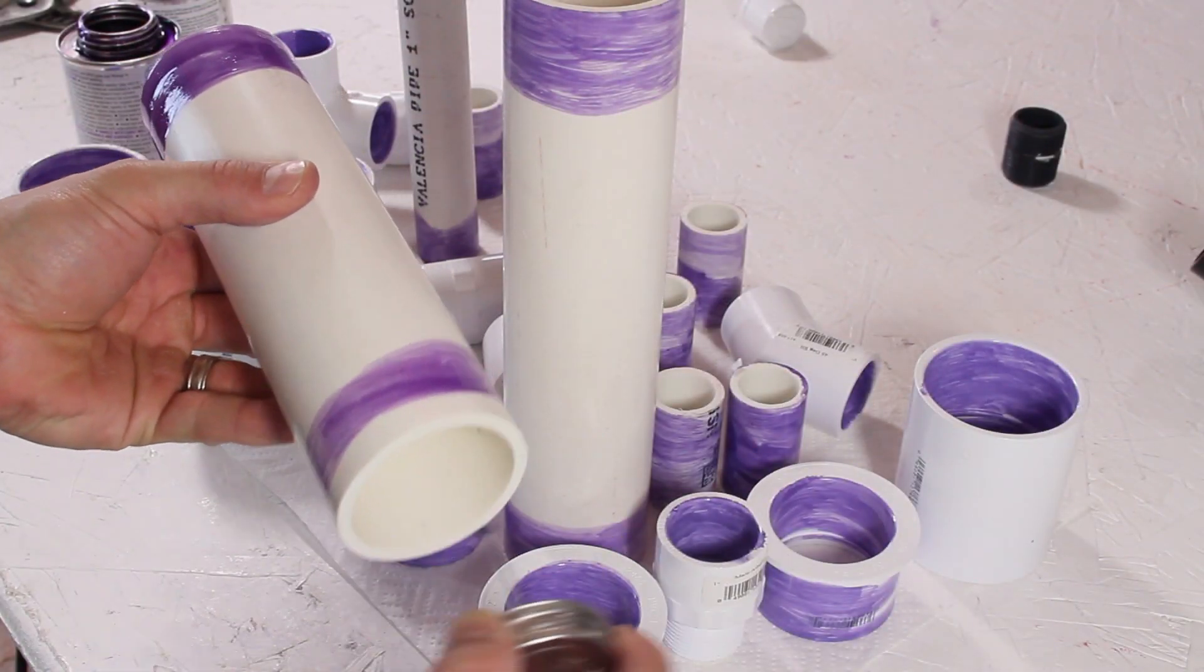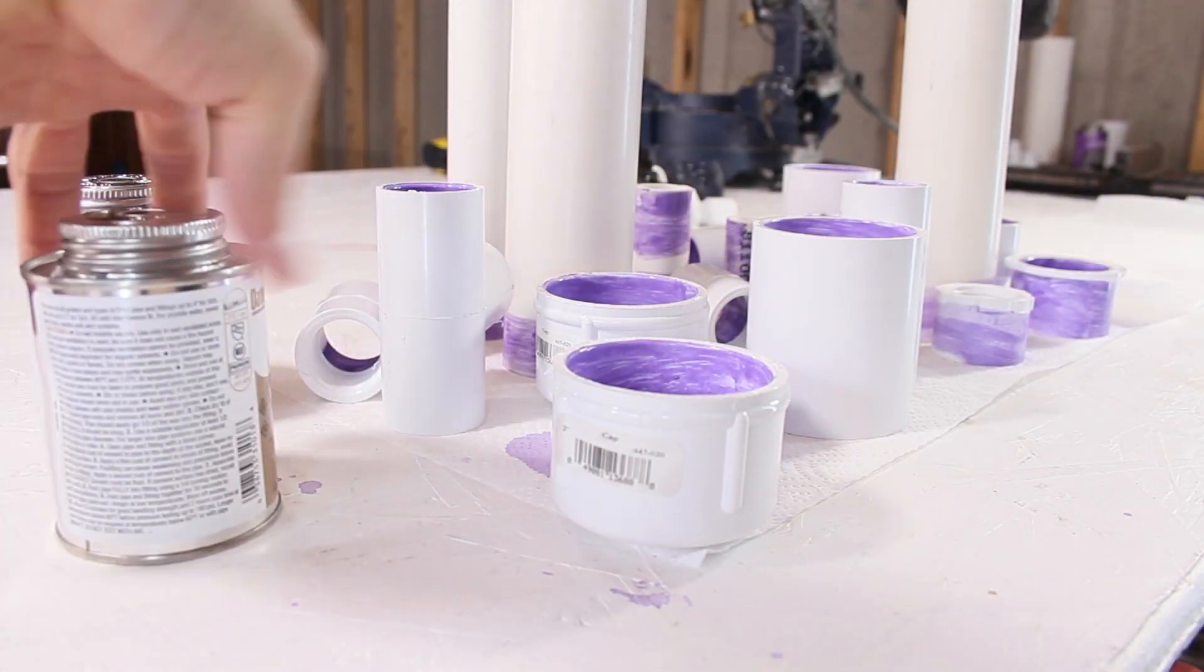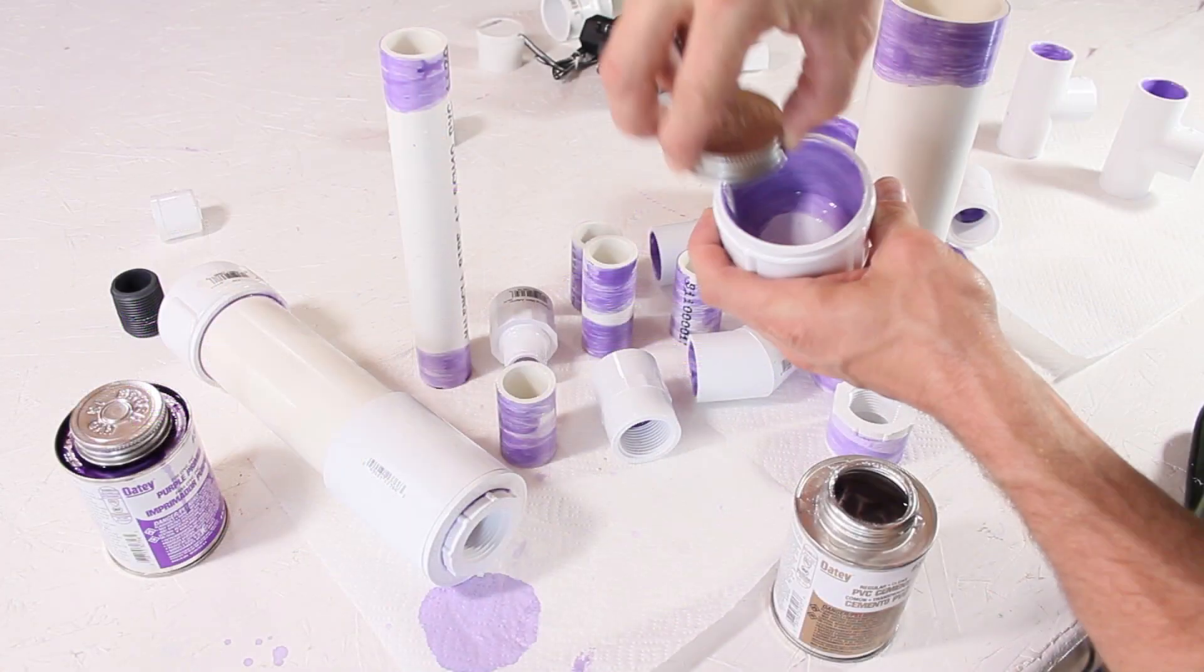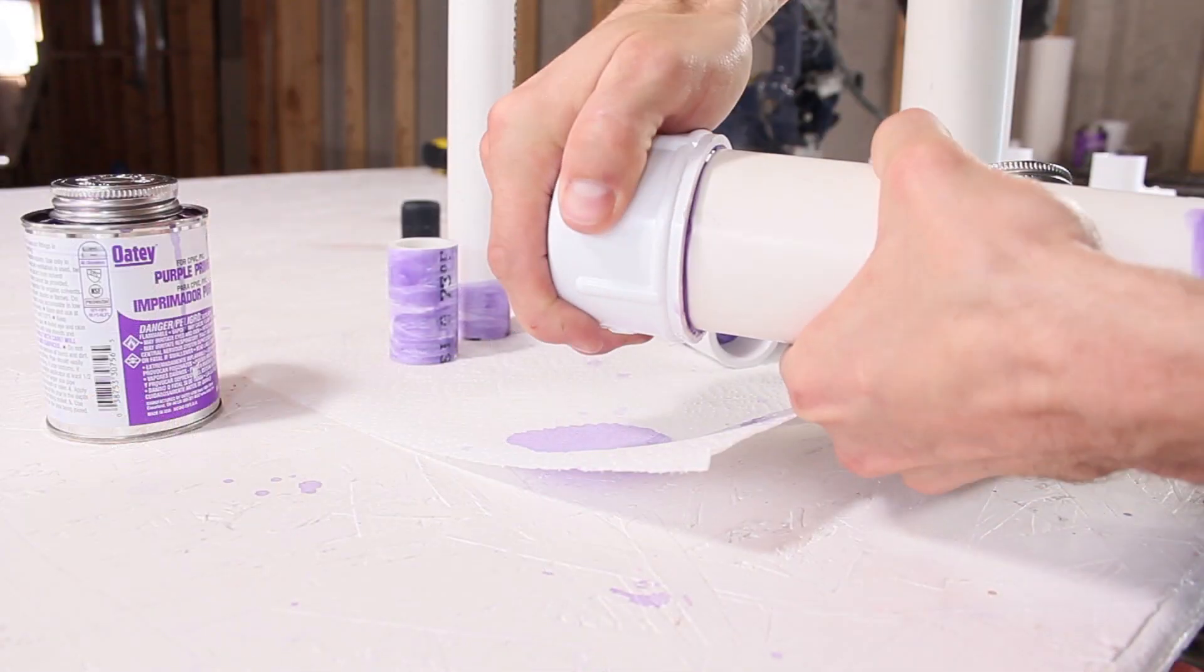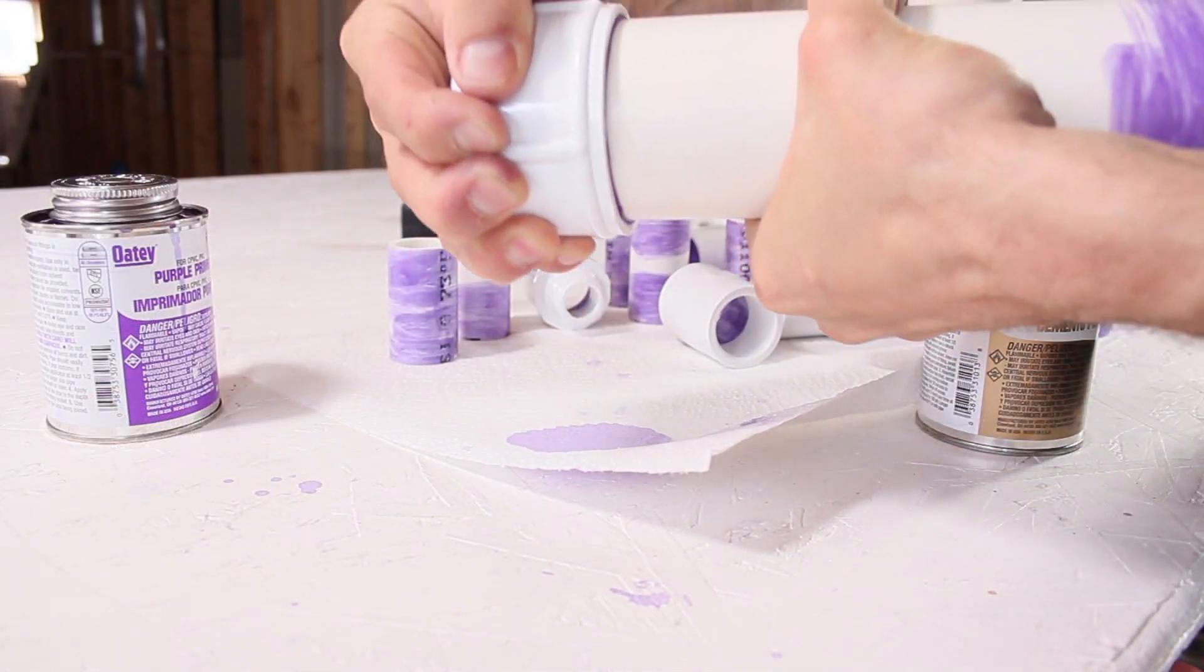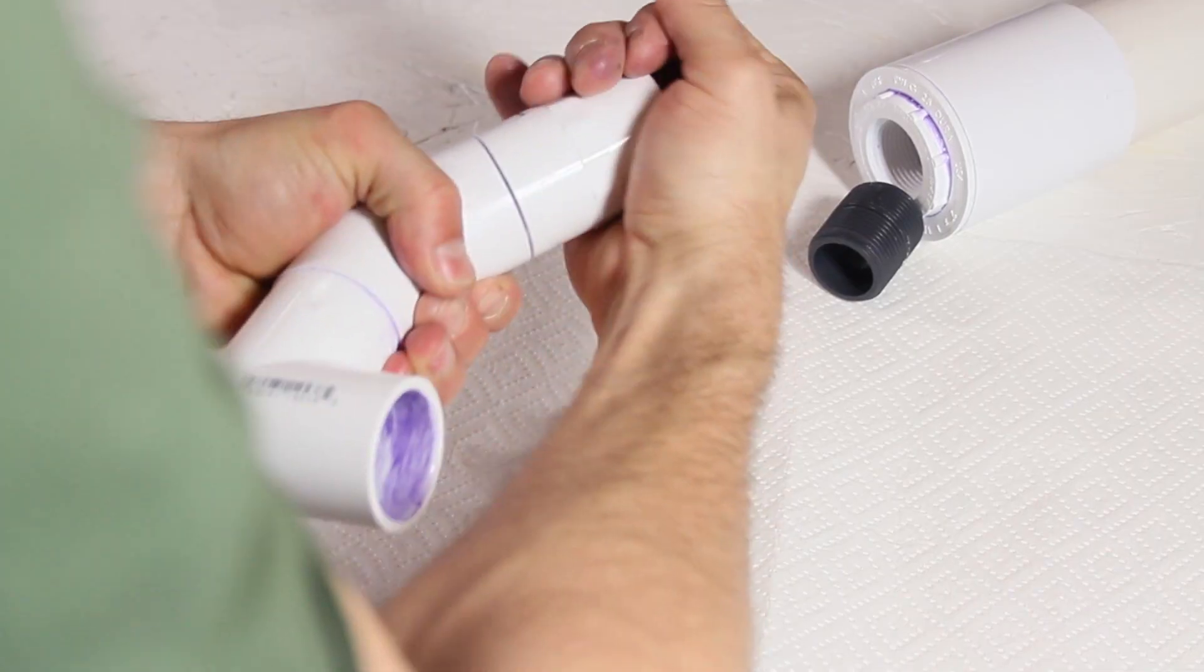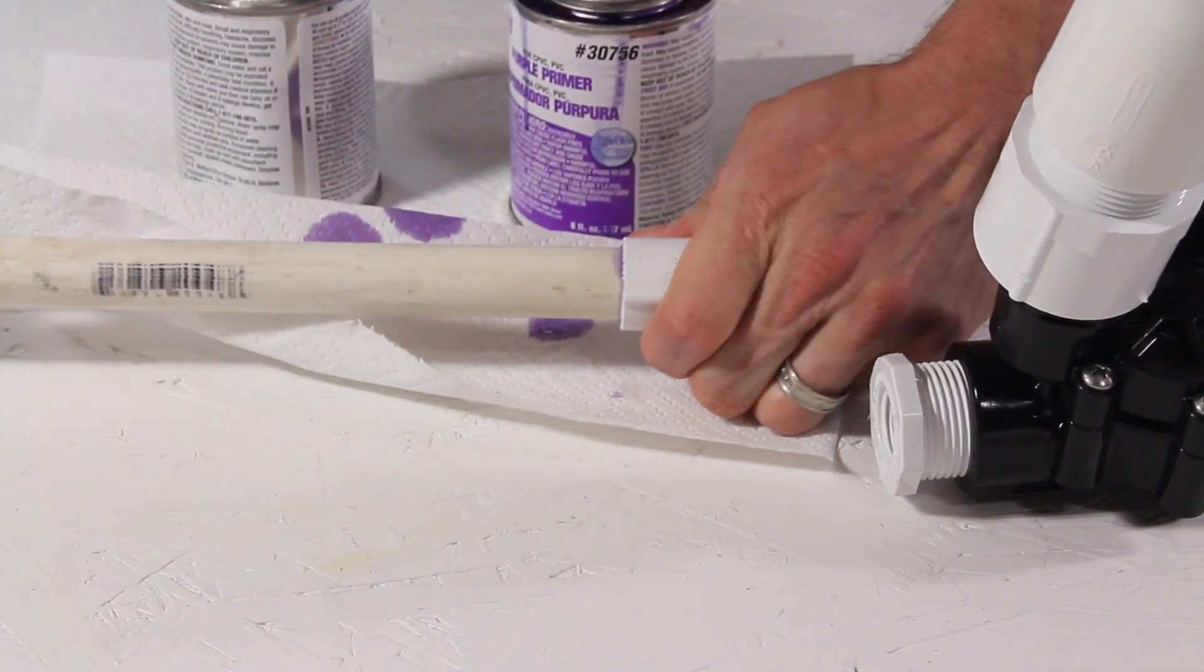Purple primer will go on first to clean the connections, and when they're dry it's time to add the PVC cement. When we make our connections it's important to use glue on both components, and twist them together to make sure we get a great seal. There's going to be a lot of pressure in these chambers, and we don't want to take any chances with a bad connection.